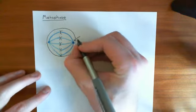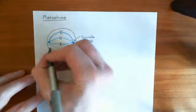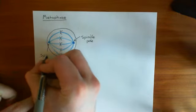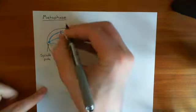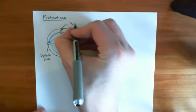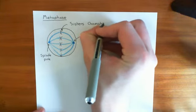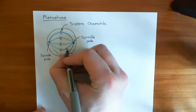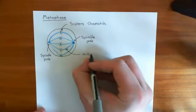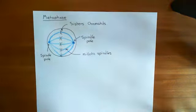There is a spindle pole on each side — two spindle poles — and this is the axis along which the cell is going to divide. In metaphase, all of the sister chromatids align down the centre of the cell, and all of the mitotic spindles have attached to the kinetochores of the sister chromatids — they've had chromosomal capture. That is the metaphase of mitosis.